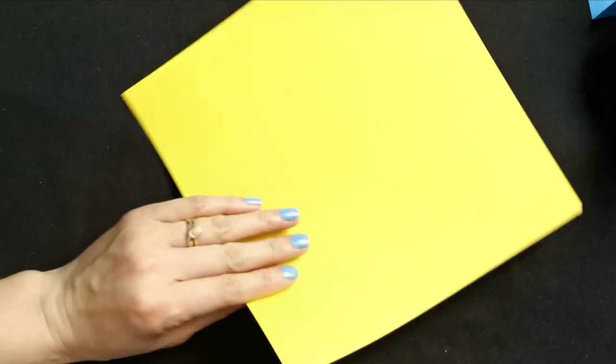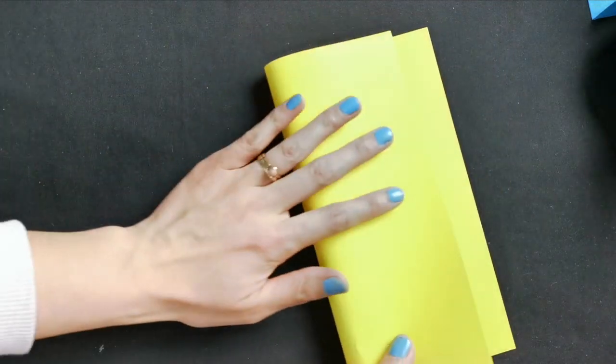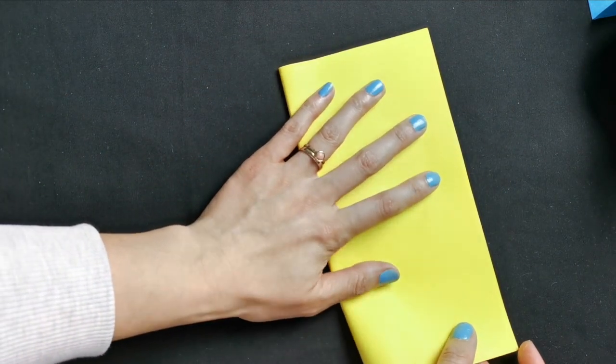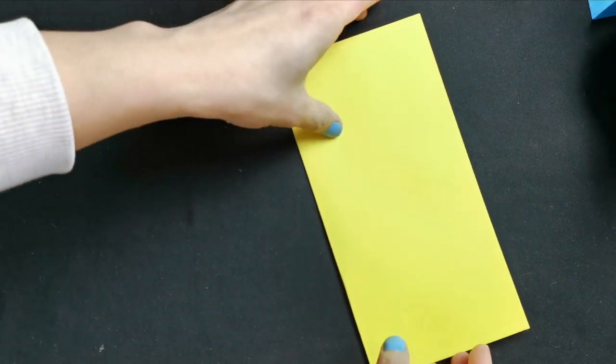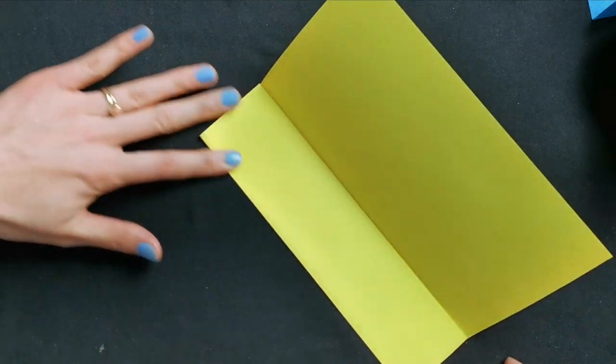So here comes the bunny. It is yellow, 15 by 15. I cut out from a four. Fold it in half and open it up and fold in half again.